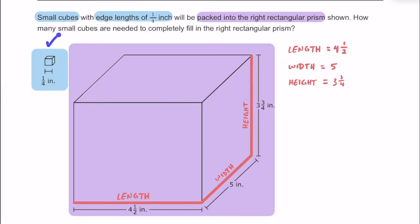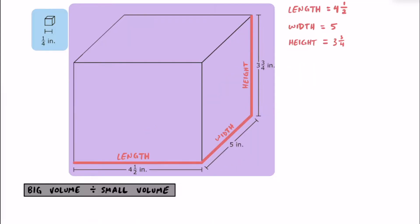Now to figure out how many of these smaller unit cubes are going to fit inside of this bigger right rectangular prism, I have two strategies that I'm going to go over. I'm going to call this first strategy the big volume divided by the small volume. If we can figure out the volume this one little cube takes up and divide that into the volume of the big right rectangular prism, we'll get how many cubes fit inside.